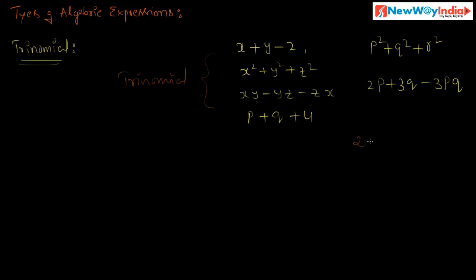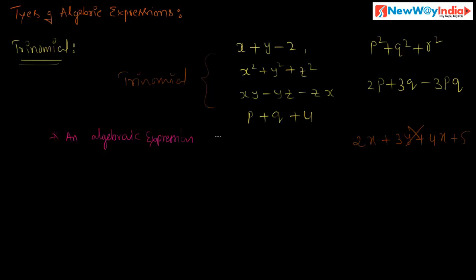Consider another example: 2x minus 3y. Is it a trinomial? No, it is not a trinomial because it contains only two terms — it is a binomial. Suppose 4x plus 5 — is it a trinomial? No, it is not a trinomial either. The definition of a trinomial is: an algebraic expression that contains exactly three terms is called a trinomial.